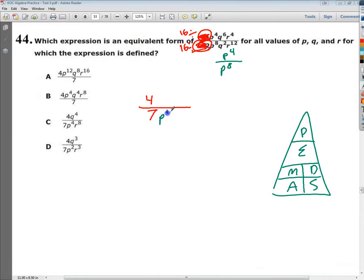And I'm going to put P to the 4 on the bottom because if I had 8 P's on the bottom, there goes 8, and then 4 P's on the top, if I got rid of the 4 P's, I'm still going to have 4 P's left on the bottom, which is why I have P to the 4th on the bottom. So now I'm done with the P's.